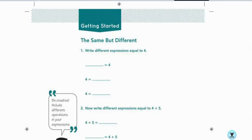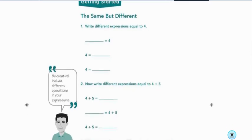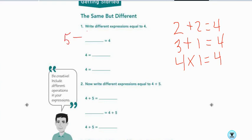This first part, it says write different expressions equal to 4. So as an example, I could just say 2 plus 2 equals 4. I could say 3 plus 1 equals 4. I could say 4 times 1 equals 4. I could say 5 minus 1 equals 4. I could say 4 equals 8 minus 4, or I could say 4 equals 20 divided by 5. All of these are good responses.